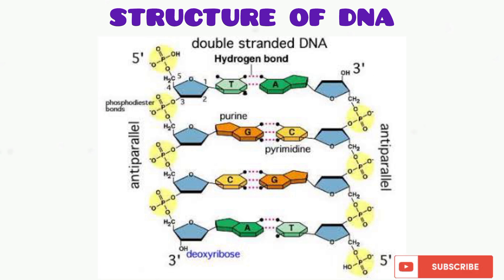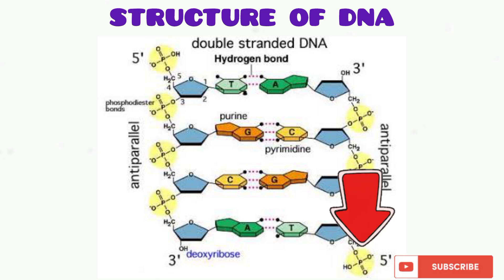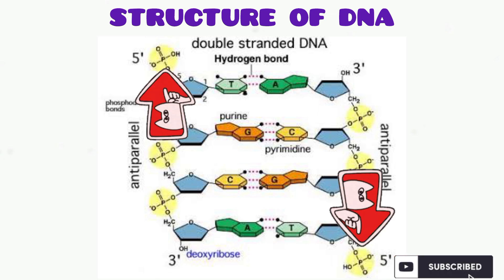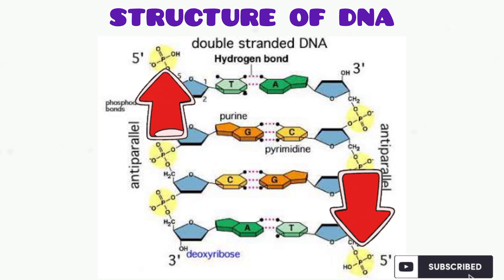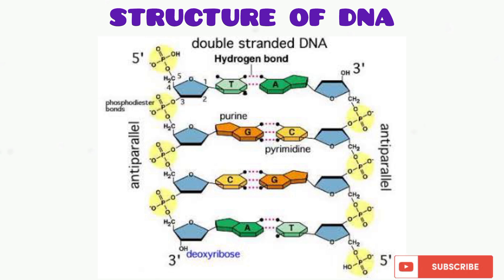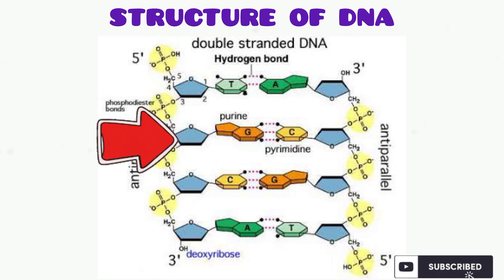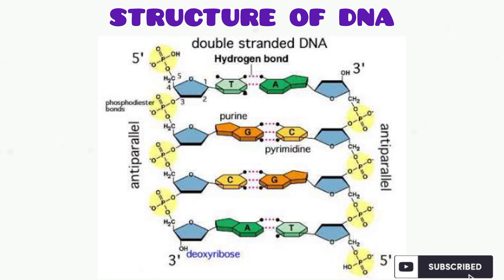The two strands are running in opposite directions — the first strand runs 3-prime to 5-prime and the second strand runs 5-prime to 3-prime, as you can see from the phosphate groups pointing in different directions. Also note that the bond between the phosphate and the sugar group is a phosphodiester bond.